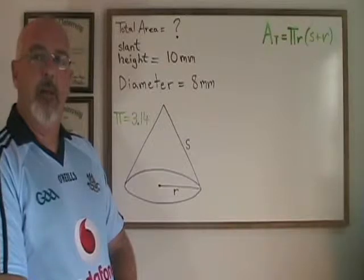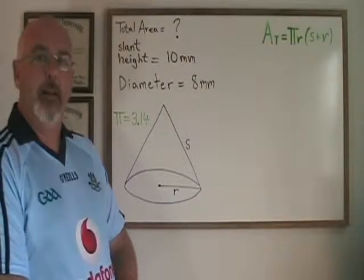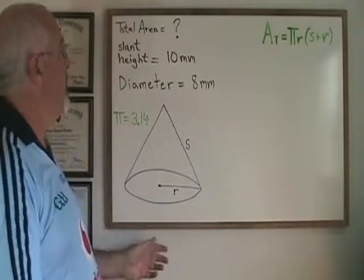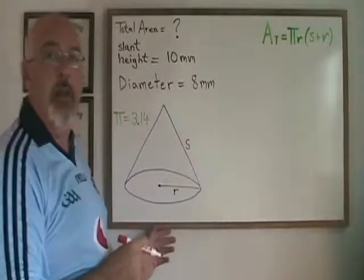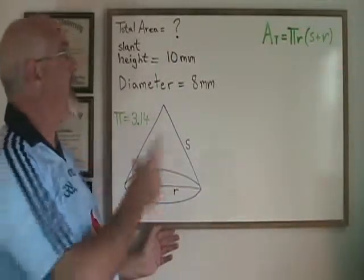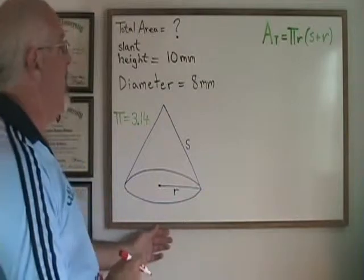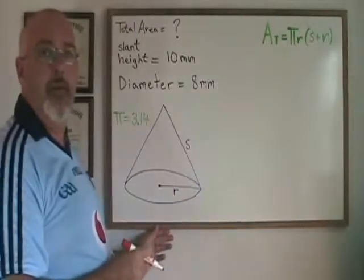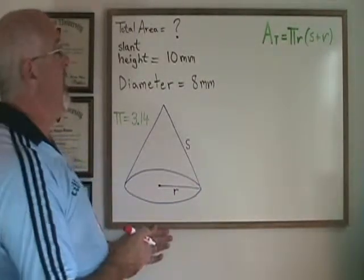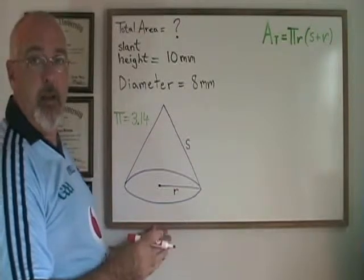One way in which the question can have a tricky little extra step is if we are given the slant height and given the diameter instead of the radius and ask for our total area. In order to find our radius so that we can use the total area of a cone formula, we just have to use a small diameter radius formula.